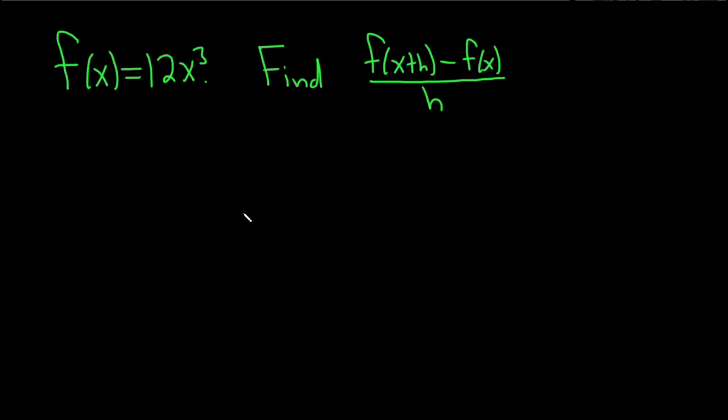In this problem, we have a function f of x equals 12x cubed, and we have to find this expression here. This is called the difference quotient. Let's go ahead and work through it. Solution.